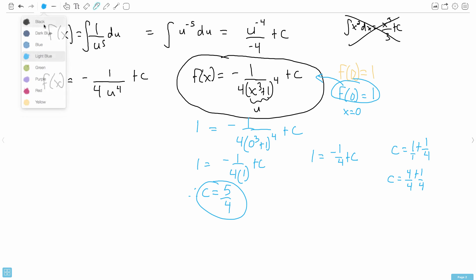Phew! So finally, now we're finally done. Now we have the full answer. We can say f of x. So therefore, f of x equals minus 1 over, we're just rewriting this here, 4 times x cubed plus 1. All that to the power of 4. And all that, instead of plus c, we say plus 5 over 4.